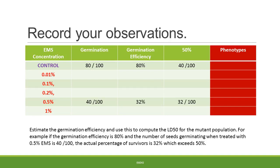The observations for this experiment are as follows: for each concentration of EMS, one needs to record the germination frequency, the germination efficiency, and the dosage at which 50% of the mutants survive.